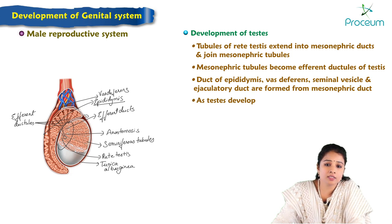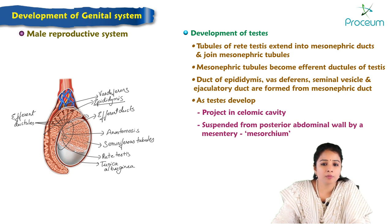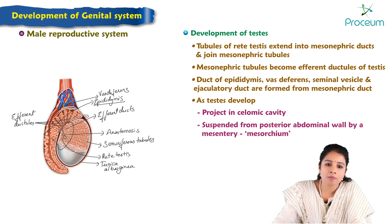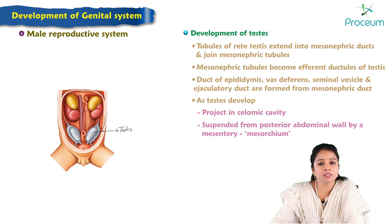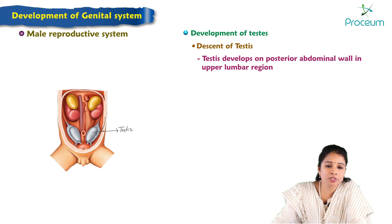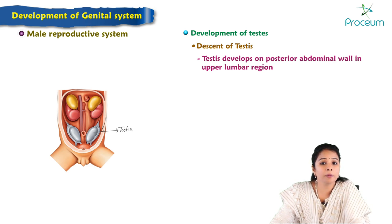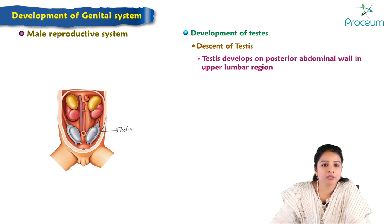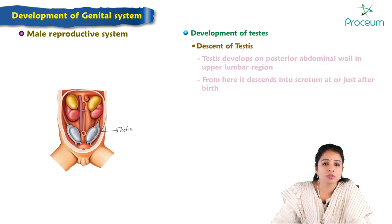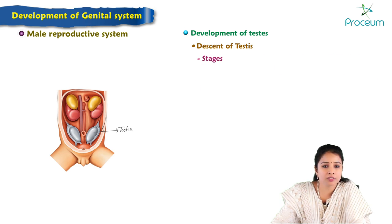As the testis develops it projects into the coelomic cavity and is suspended from the posterior abdominal wall by a mesentery called the mesorchium. The testis develops on the posterior abdominal wall in the upper lumbar region, and from there it descends into the scrotum, reaching the scrotum just after birth.